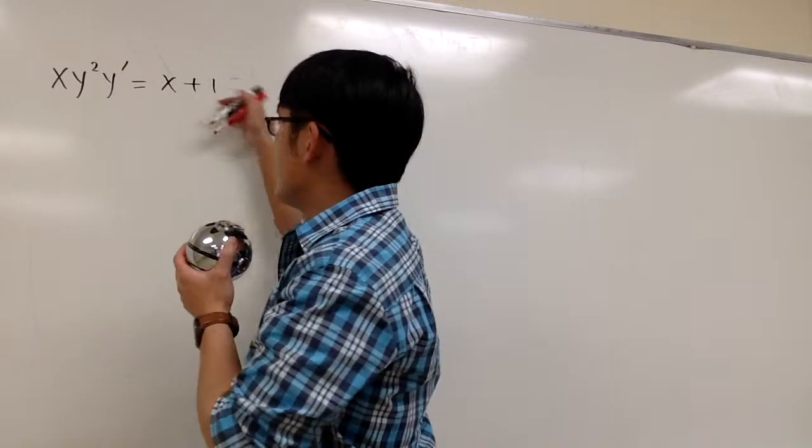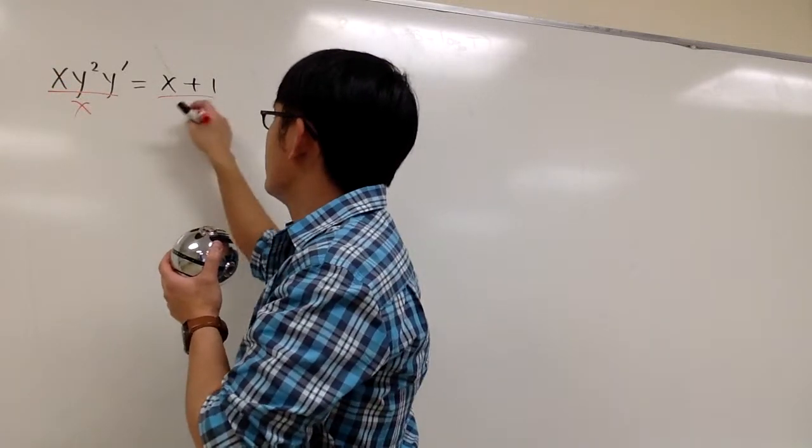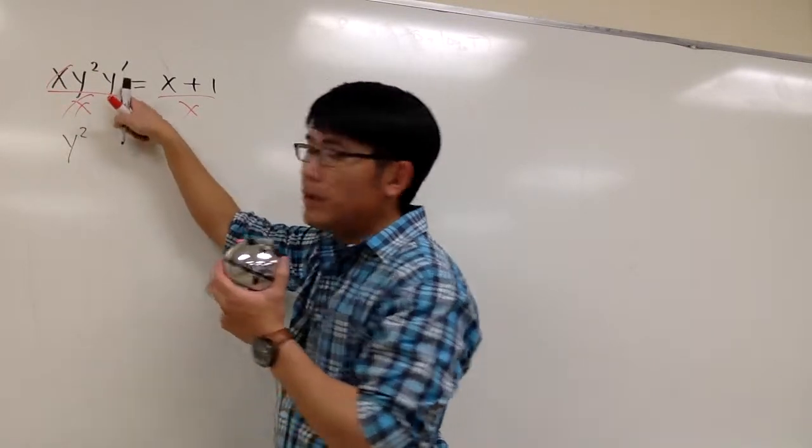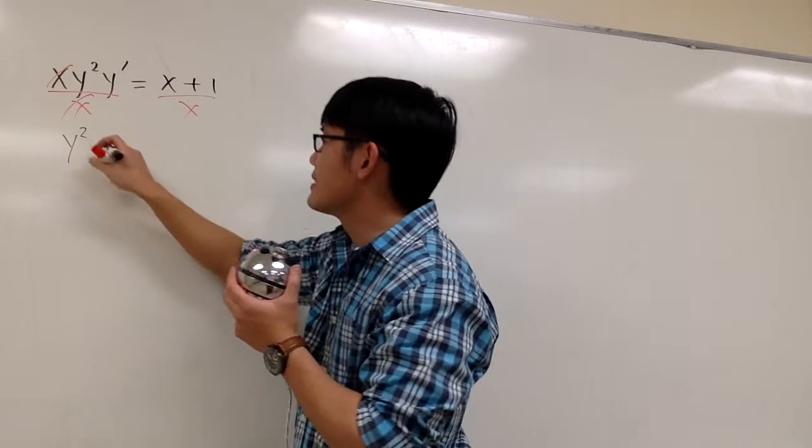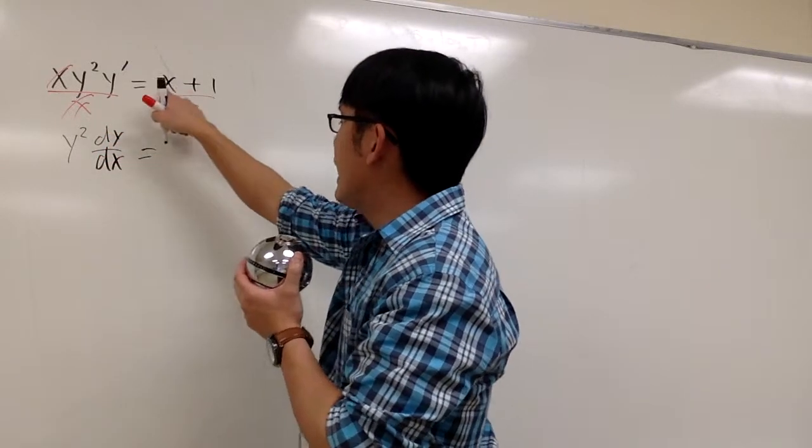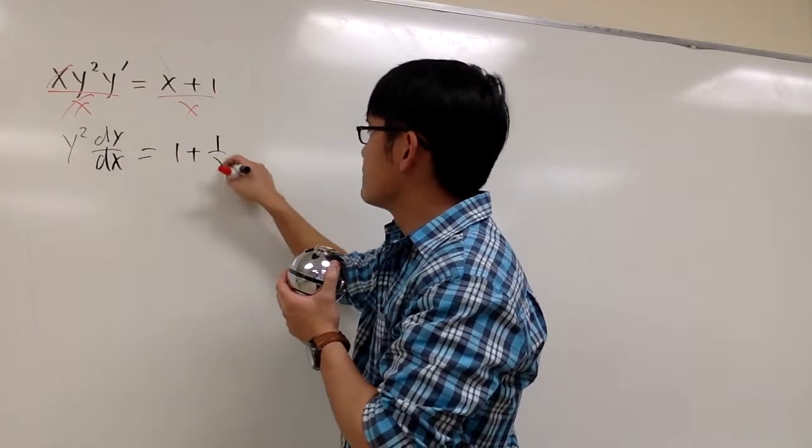And since the x is right here already, and I don't want this x right here, let's divide everything by x. So I get y squared, and let me write this as dy dx. And this is equal to, I can look at this as 1 plus 1 over x, isn't it?